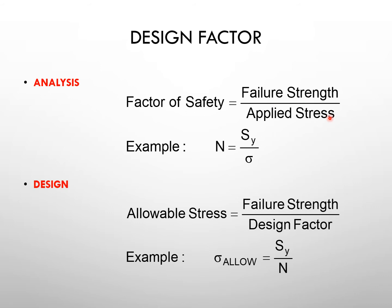Whatever the failure strength we have of any material, we need to consider that, and then we need to consider whatever load is going to apply — the stresses, or the stresses coming on that structure. For example, the factor of safety, n, is the failure strength divided by sigma, which is the applied strength. While designing, what we need to consider is the allowable stress, which is equal to the failure strength divided by the design factor.